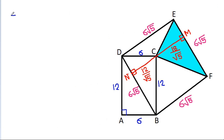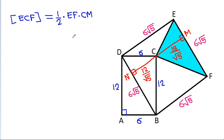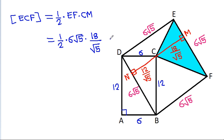Now, area of ECF equals one-half times EF times CM, which is one-half times 6√5 times 18/√5. The √5 cancels and we get one-half times 6 times 18, which is 3 times 18, giving area of ECF equals 54.